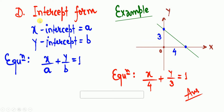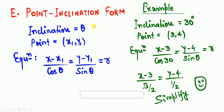Next is the intercept form. The x-intercept is where the line cuts the x-axis and y-intercept is where it cuts the y-axis. The equation is x/a + y/b = 1. For example, x-intercept = 4 and y-intercept = 3 gives x/4 + y/3 = 1. Next is point-inclination form: given inclination θ and point (x1, y1), the equation is (x - x1)/cos θ = (y - y1)/sin θ = r. For inclination 30° and point (3, 4), substitute and simplify to get the equation.